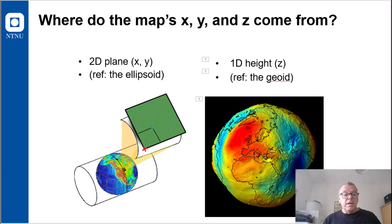So this answers the question, where do the maps x, y and z come from? The x and the y comes from the ellipsoid, whereas the z, the height, come from the geoid.